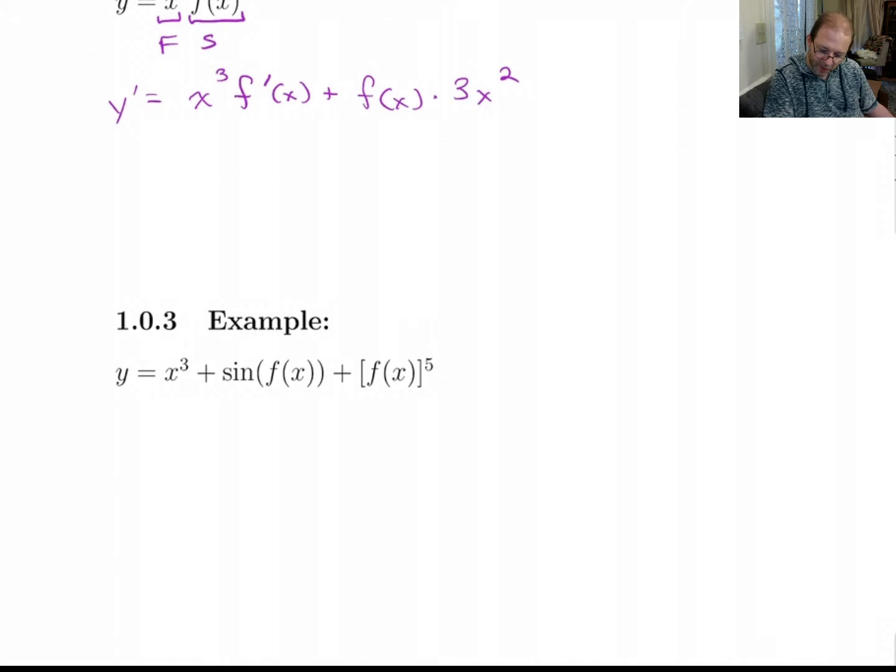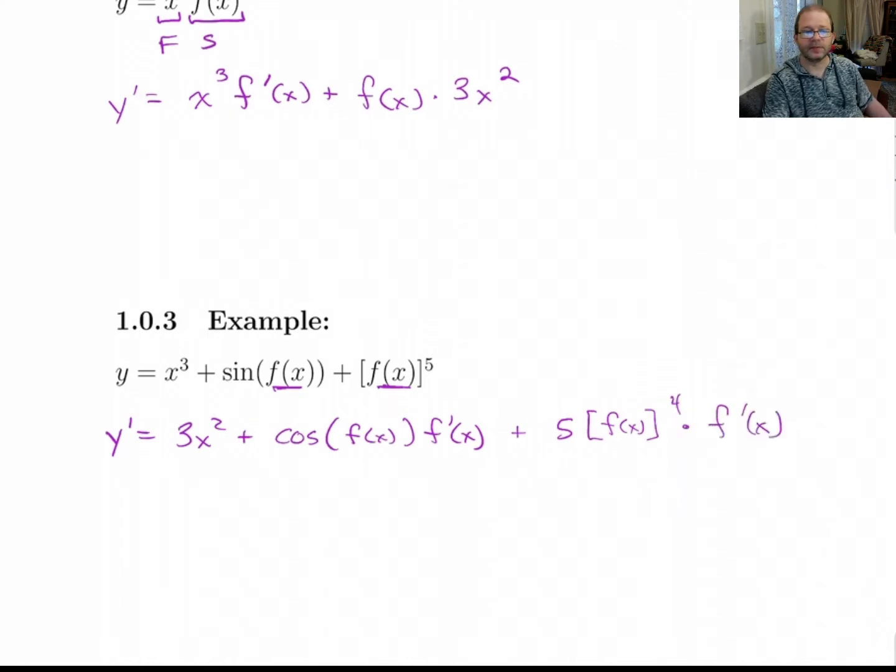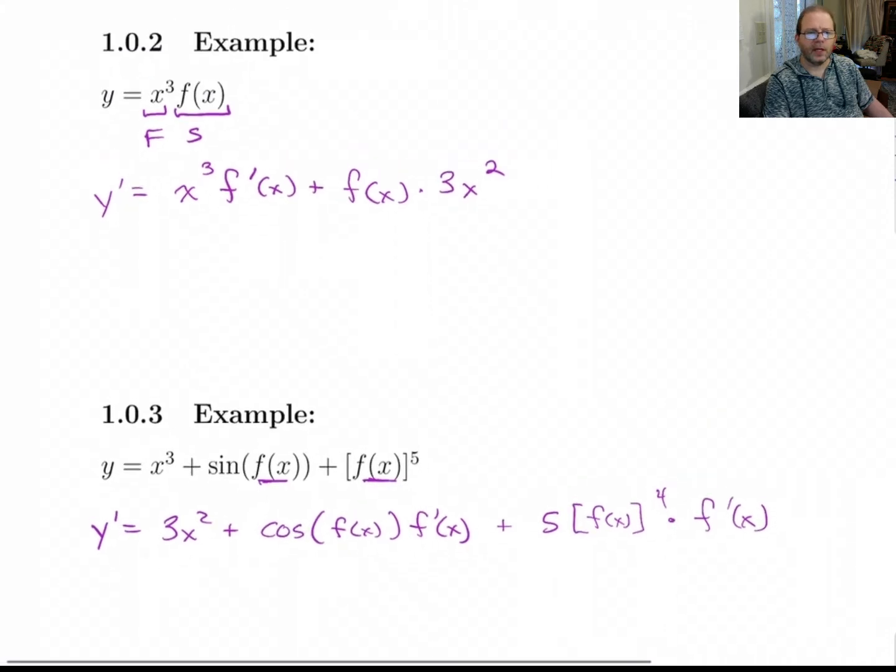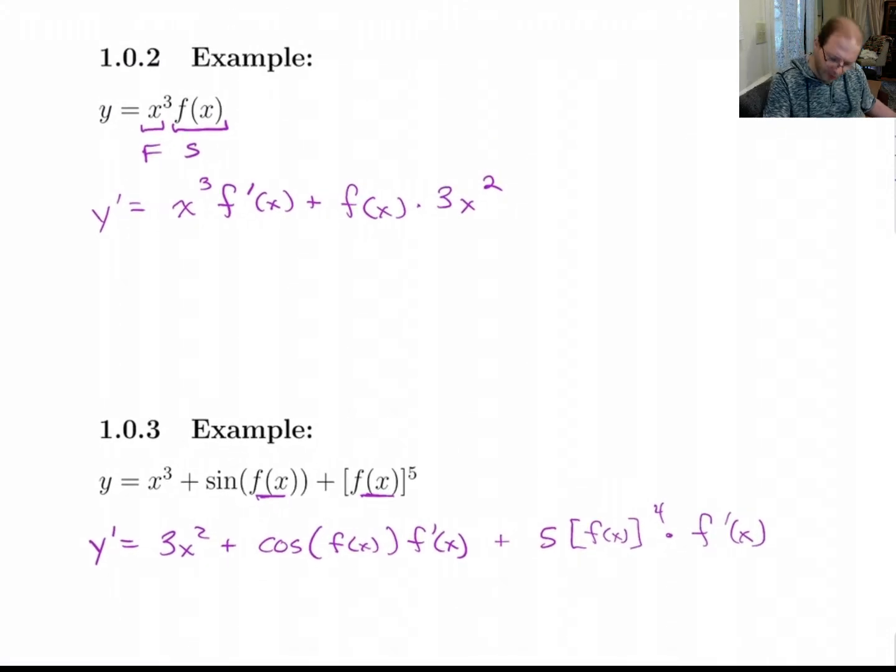And on this one, f(x) is showing up as an inside function in a couple of places. So we've got to use the chain rule. You get 3x² plus derivative of sine is cosine. And of course, the chain rule says you've got to multiply by f'. And same thing over here. So here, you get 5 times this to the fourth times the derivative of the inside function, so you get times f'(x).